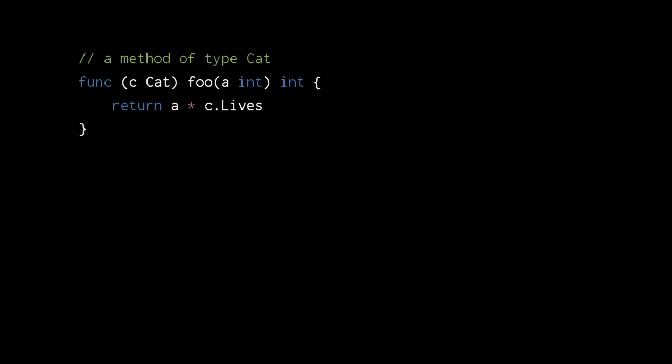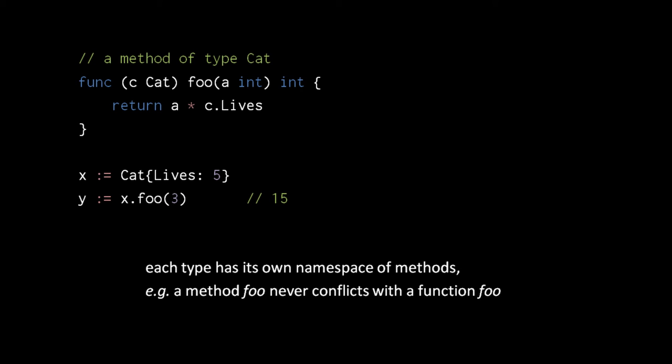What Go calls a method is a kind of function in which one parameter is passed in a special way. This parameter is called the receiver, and it is denoted in parentheses before the name of the function. Here, the method foo has a receiver c of type cat, another parameter a of type int, and the method returns an int. In the body, we return the product of a and c.lives. To call a method, the receiver is placed not in the parentheses but instead before a dot in the method name. Here we create a cat x and then call its foo method with the argument 3. This is of course nothing we couldn't accomplish with just an ordinary function, but the real significance of methods will be revealed when we talk about interfaces. Each receiver type has its own namespace of methods, separate from other receiver types and separate from the package namespace. So in a single package, I could define a method foo on the cat type, another method foo on a dog type, and an ordinary function foo.